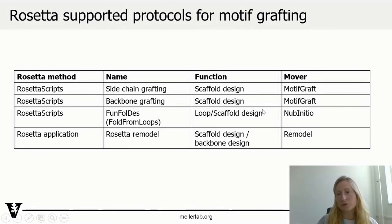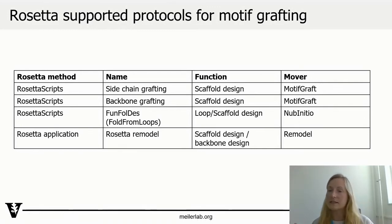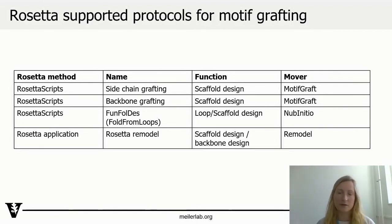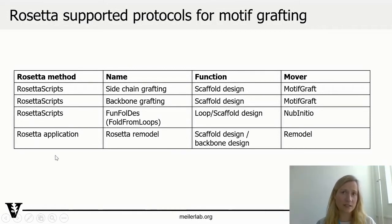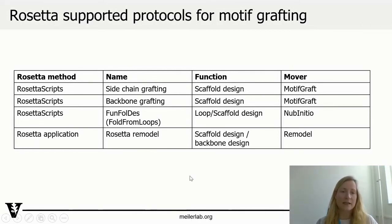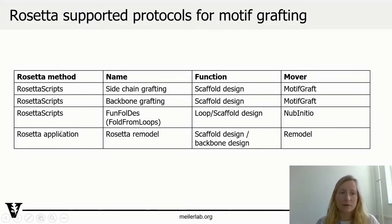The first mover we use is the core of what Rosetta is actually applying to the pose, doing the back work of the protocol. That's the motif graft mover in this case. FunFold design uses the loop-initio mover, and we're going to be looking at this more closely in our tutorial. Rosetta Remodel is an application, so it has to be used on the command line with options and is not as easy to modify as compared to RosettaScripts.